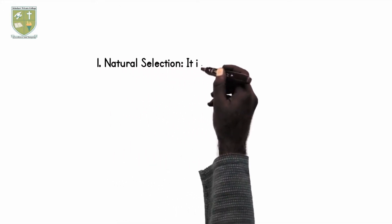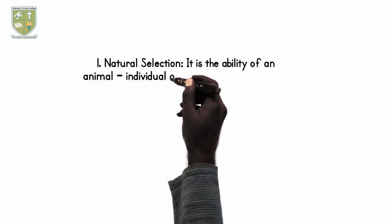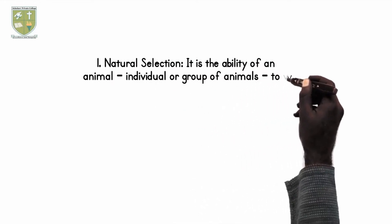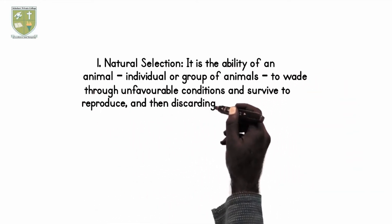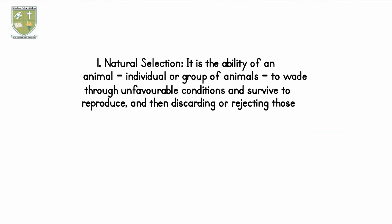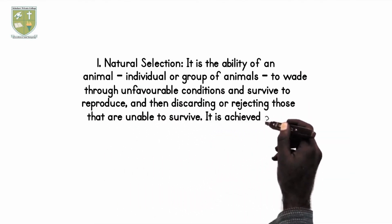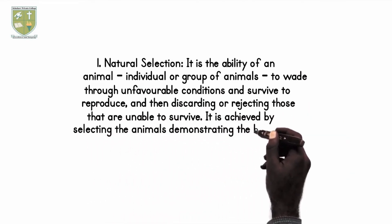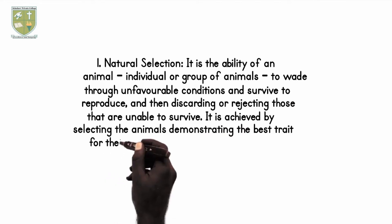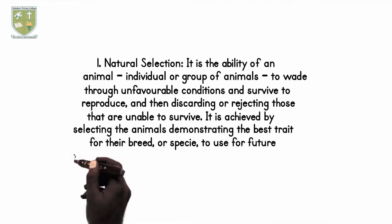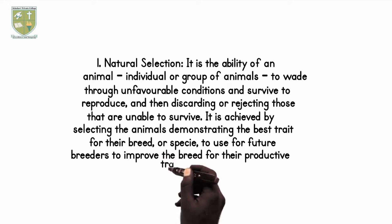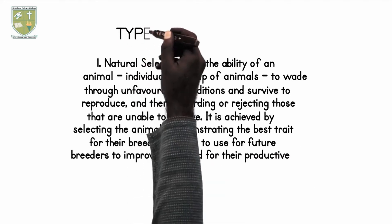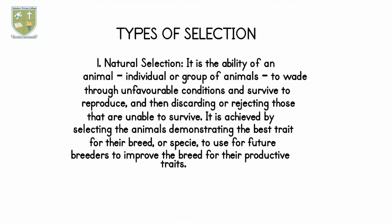Types of Selection. 1. Natural Selection: It is the ability of an animal, individual or group of animals, to wade through unfavorable conditions and survive to reproduce, discarding or rejecting those that are unable to survive. It is achieved by selecting the animals demonstrating the best traits for their breed or species to use as future breeders to improve the breed for their productive traits.